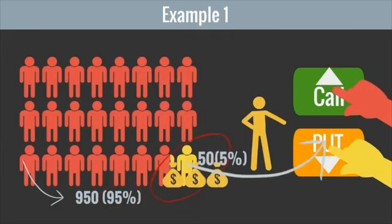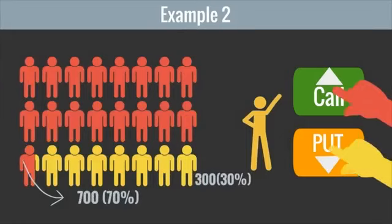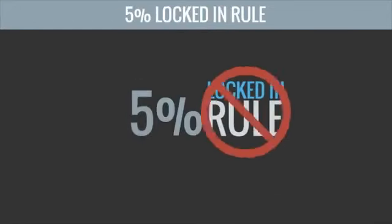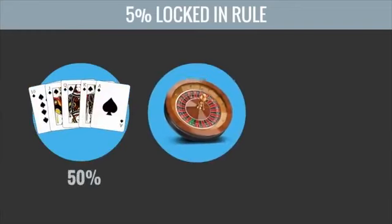Now this is important. If only 700 were clicking call and 300 were clicking put, that's 70% call and 30% put, so the 5% locked in rule wouldn't apply. Your chances of winning, no matter which side you took, would be no better than casino roulette, say 50-50.